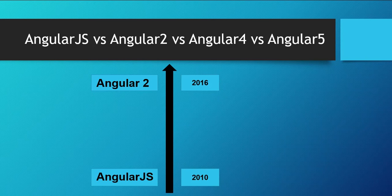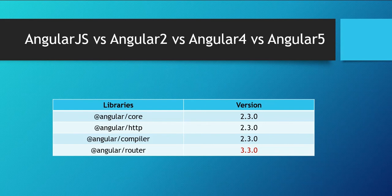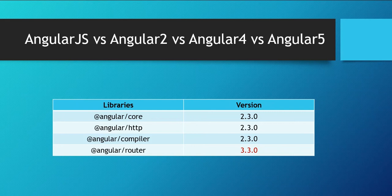There was a reason behind skipping Angular 3. Angular uses a lot of different libraries. For example, @angular/core, @angular/http, and @angular/compiler were all at version 2.3.0, but @angular/router was already at version 3.3.0. Since all libraries had the same version except the router library, the Angular team decided to align all versions and launch Angular 4 directly, not Angular 3.